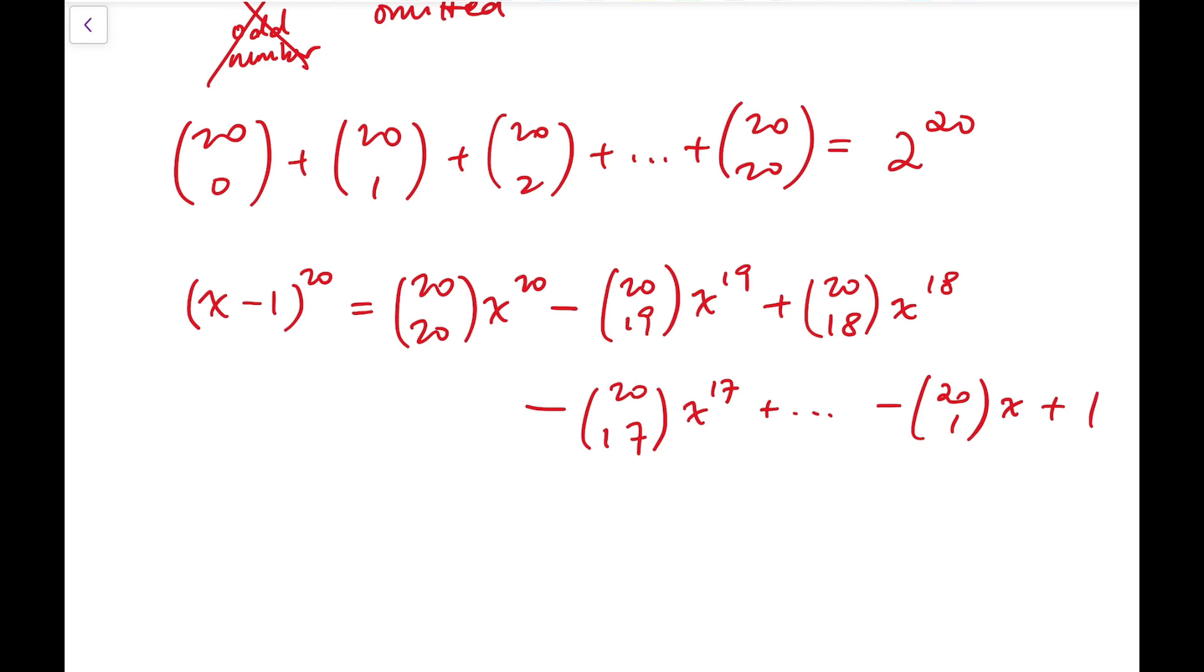Now for this expansion, if we replace x by 1 again, so that means I'm removing all the x terms like before. And then this sum, adding all the 20 choose even numbers subtracting all the 20 choose odd numbers, is actually equal to 1 minus 1 to the power 20, and that's equal to 0.